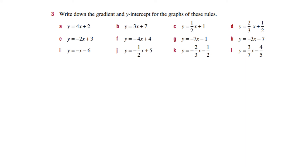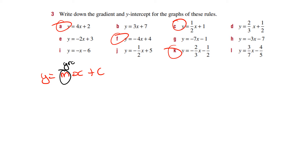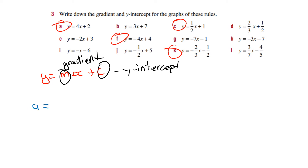Next: write down the gradient and y-intercept for graphs of these rules. I'll pick a couple — A, C, F, and K. Remember, y equals mx plus c: m is the gradient, and c is the y-intercept. So for A, which is y equals 4x plus 2, I'll circle the gradient in orange — that's 4 — and the y-intercept in green — that's 2.